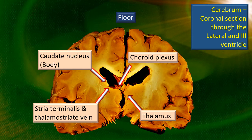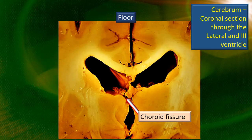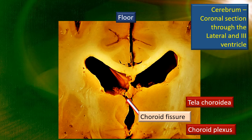Between the thalamus and the fornix, there is a small slit. Through the slit, the choroid plexus projects into the lateral ventricle. This is a further blow-up of the area where the lateral ventricle and the third ventricle are seen. That gap is the choroid fissure. Through the choroid fissure, the tela choroidea — that is the pial membrane — and the blood vessels within it move into the lateral ventricle. That's the choroid plexus projecting through the choroid fissure, which contains the choroid plexus and the tela choroidea.